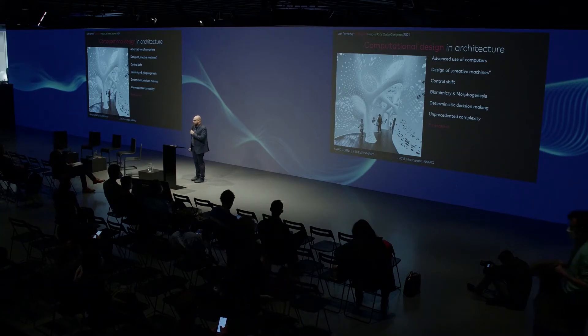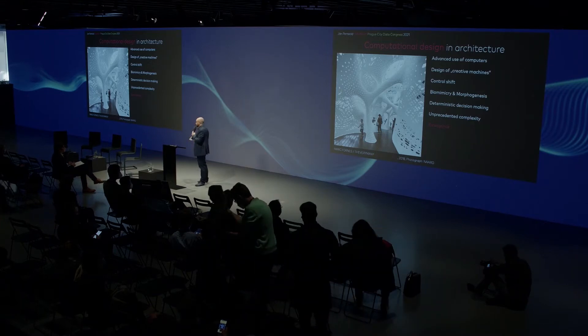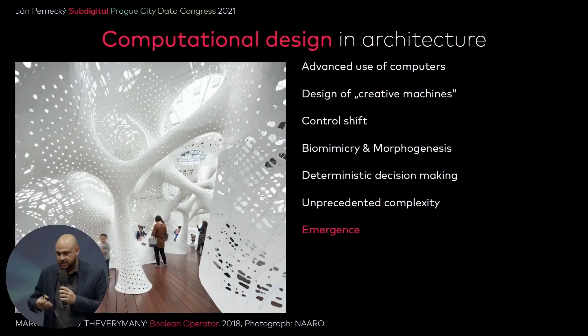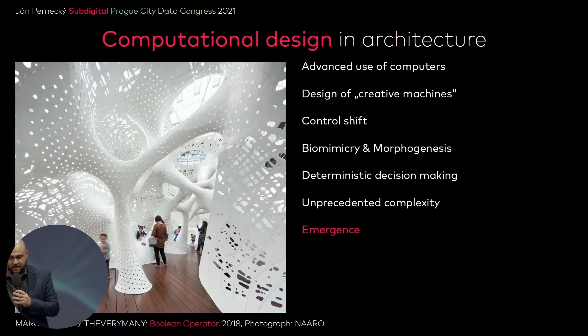Today I'm going to talk about a discipline of architecture called computational design, which means that architects and designers can use computers in an advanced way. When I explain it to people, I say that we are not designing buildings — we are designing little pieces of software that then design the building. So we are designing creative machines that eventually design the final product.